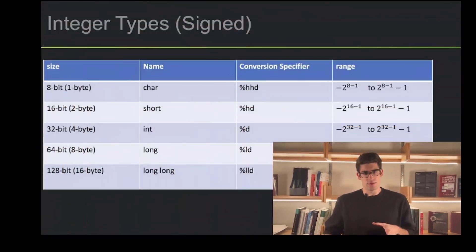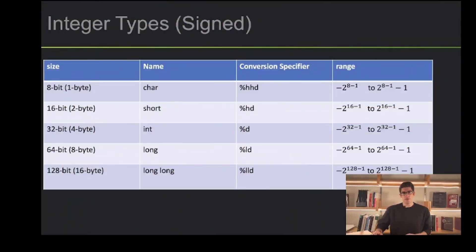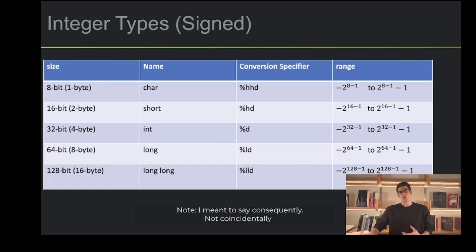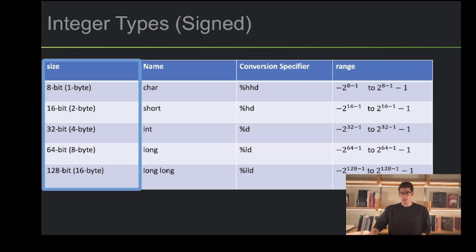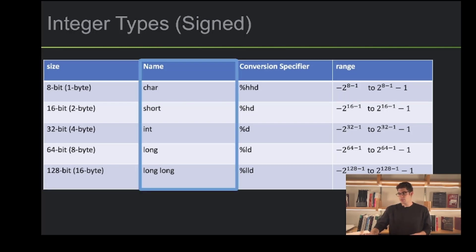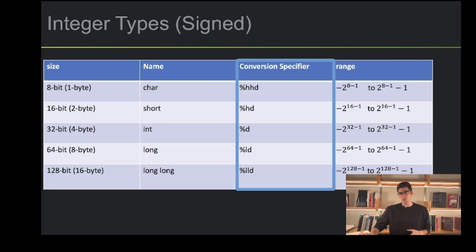Let's start looking at the basic data types, starting with signed integers. We have a couple of signed integer types, and the only difference between them is the amount of storage they have. Coincidentally, the more storage we have, the larger the range of values we can represent. In this table we have the size of each signed integer type, followed by the name of the type, then the conversion specifier we would use, and lastly the range of values we can represent.